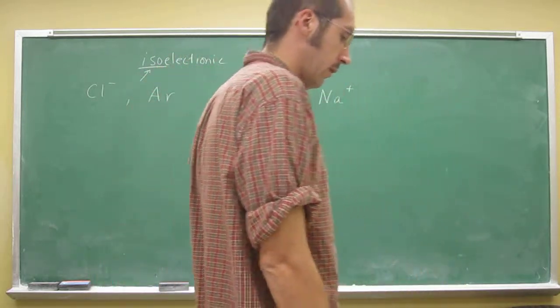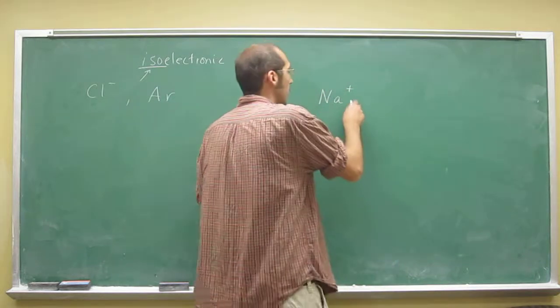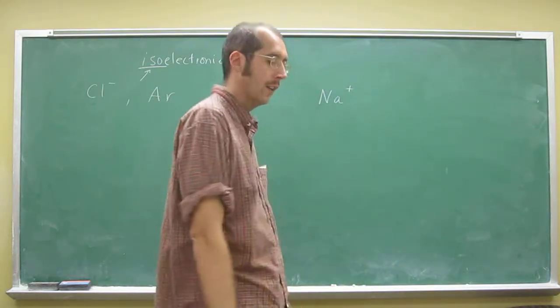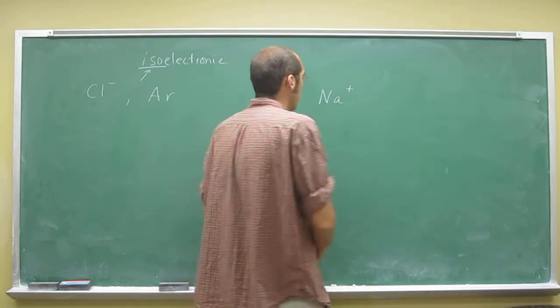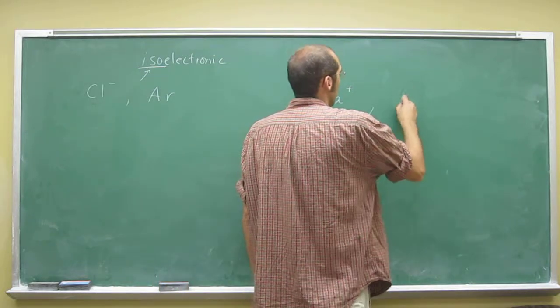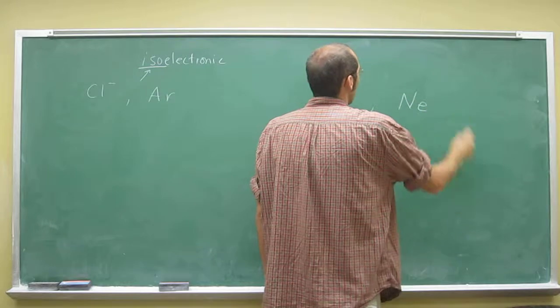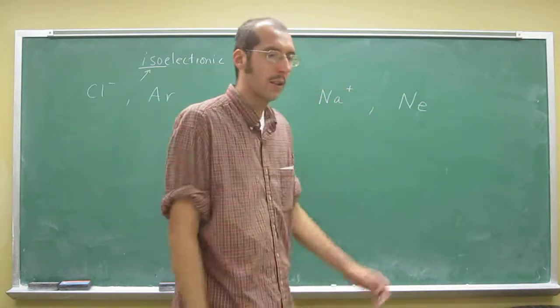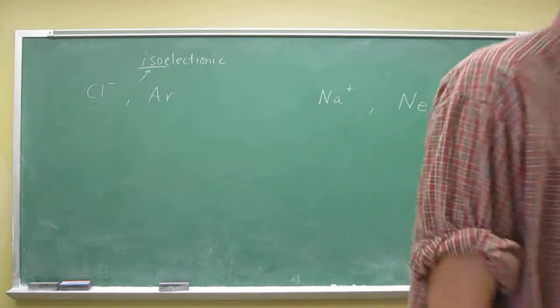Sodium, what electron configuration does it obtain by losing that last electron? It's a 3s electron, so it's going back down to the neon configuration. So sodium ion is isoelectronic with neon.